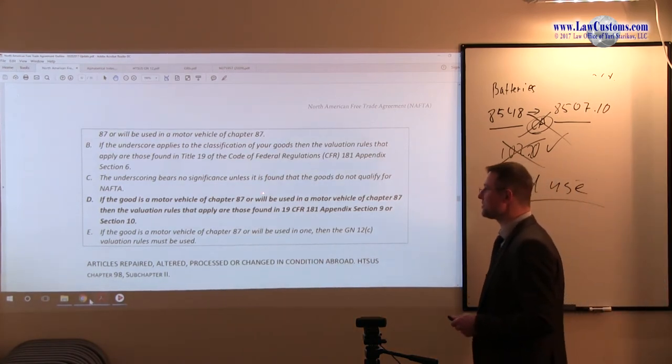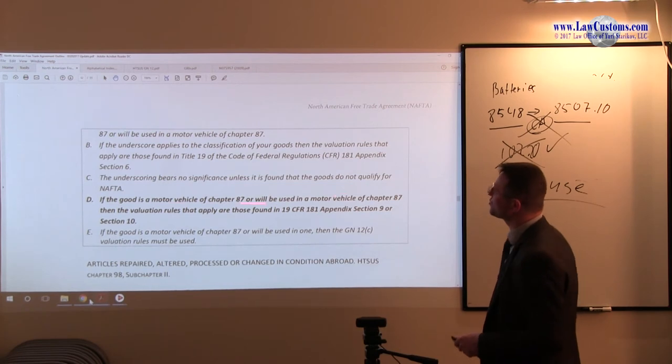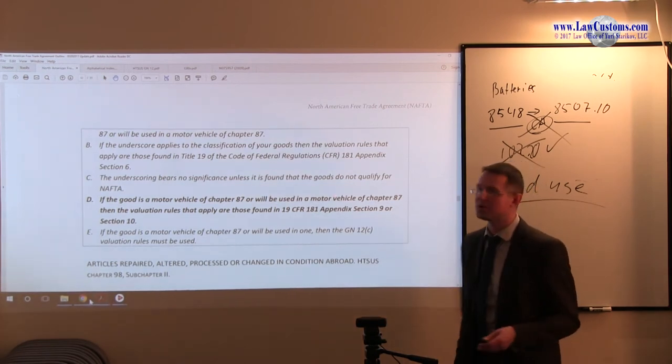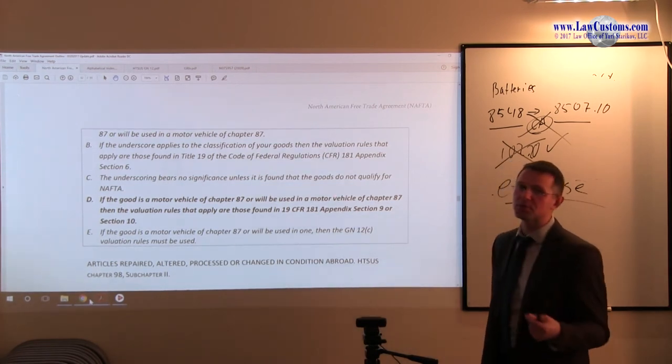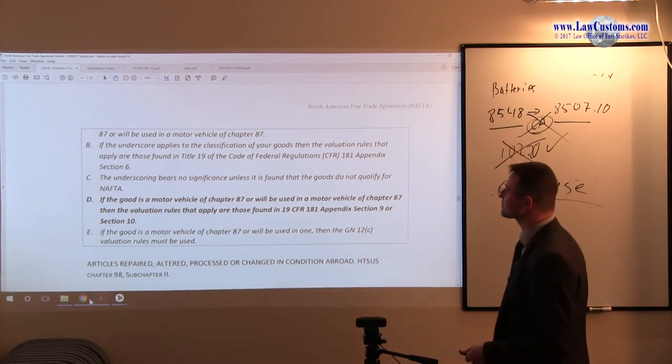The underscoring bears no significance unless it is found that the goods do not qualify for NAFTA. No, underscoring bears significance, again, in the context of automotive goods. D. If the good is a motor vehicle of Chapter 87, or will be used in a motor vehicle of Chapter 87, such as the rubber products that we saw above.